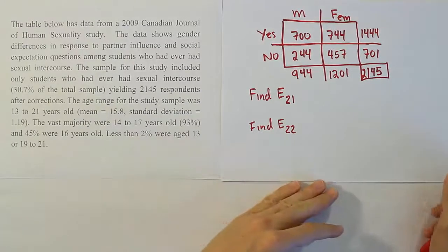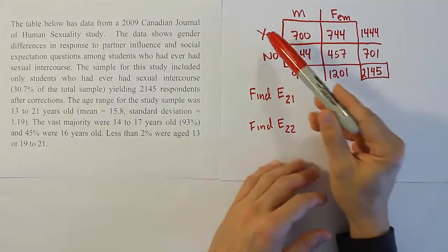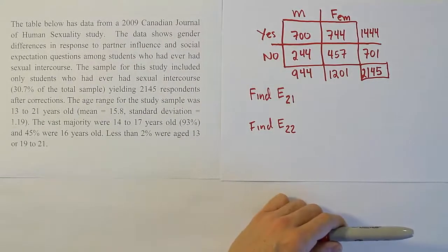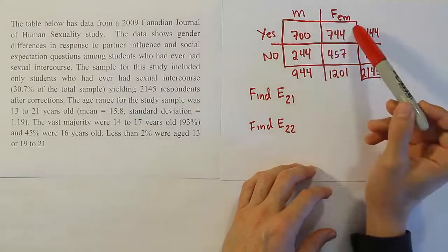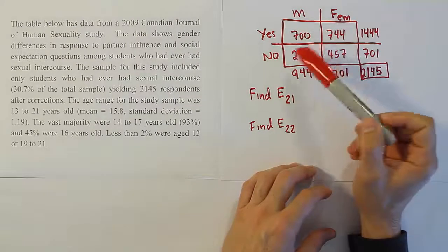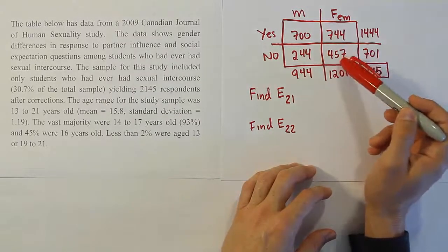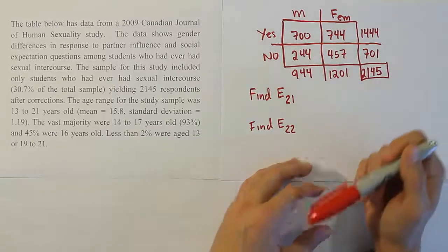This is basically the table copied correctly. The males, the females. Yes or no is the question of whether they used condoms the last time they had sexual intercourse. You see that 700 of the males said yes, 744 of the females said yes, 244 of the males said no, 457 of the females said no, and this gives us these totals, and then there's our grand total for the survey.